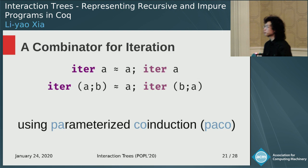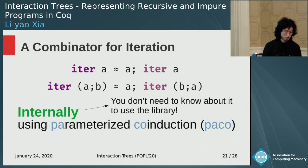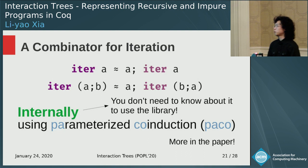These equations involving recursion are proved using parameterized co-induction, which is implemented in the PACO library. However, this is entirely an internal detail of our library — as a user, you don't have to know about PACO. You can just use the equations as they are, and you can see how we do that in the paper.